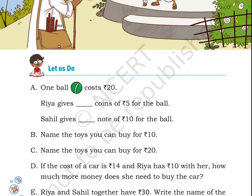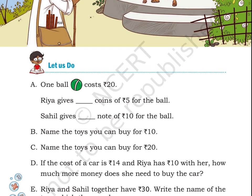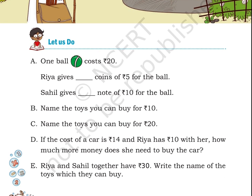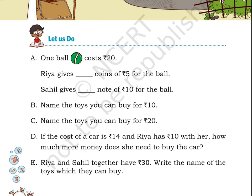Sahil is buying a ball and is giving rupees 20 to the seller. Let us do A: One ball costs rupees 20. Rhea gave blank coins of rupees 5 for the ball; Sahil gave blank notes of rupees 10 for the ball. B: Name the toys you can buy for rupees 10. C: Name the toys you can buy for rupees 20. D: If the cost of a car is rupees 14 and Rhea has 10 rupees with her, how much more money does she need to buy the car?